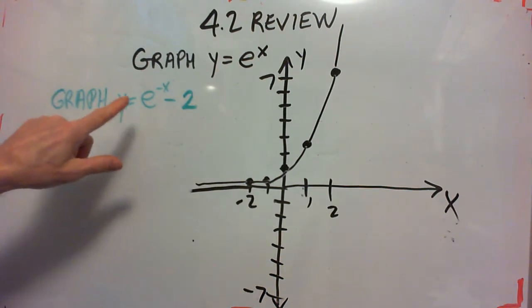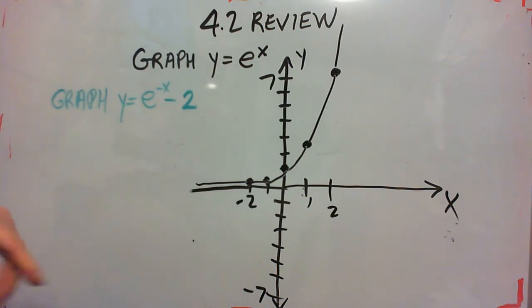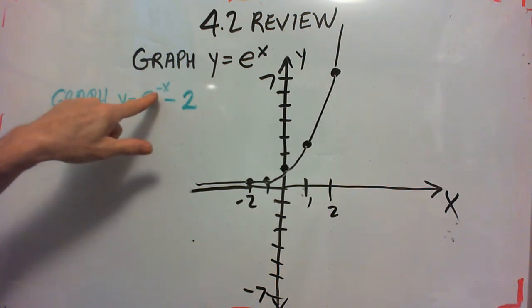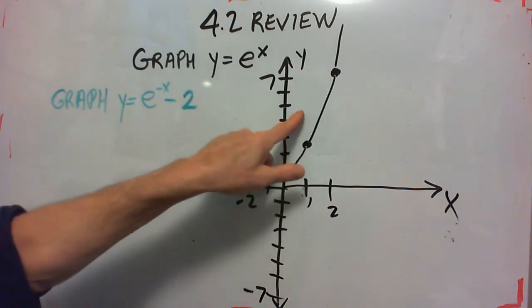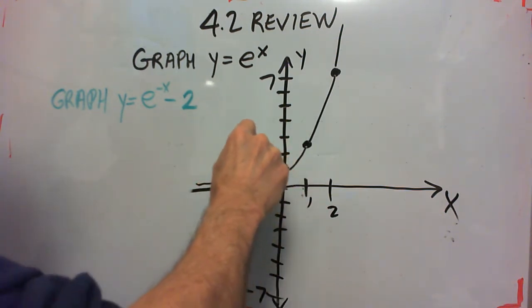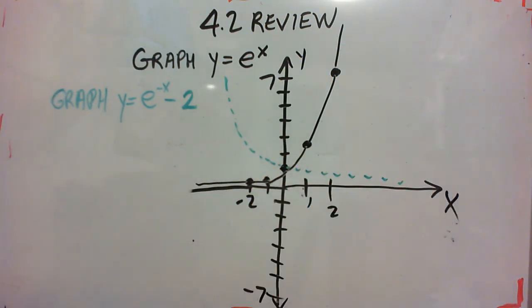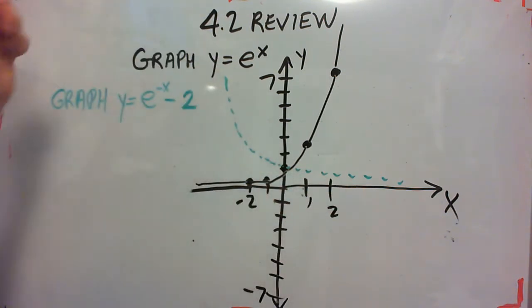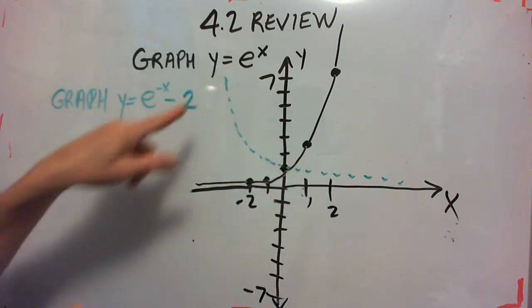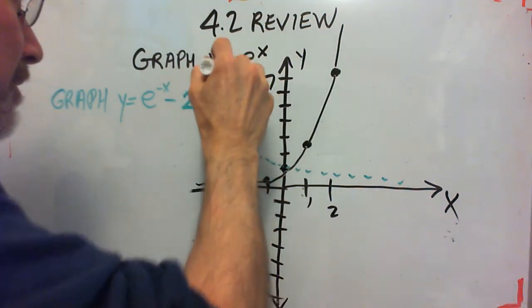Okay, now we're going to graph e to the negative x minus 2 by using shift rules. When we replace x with negative x, we reflect this graph across the y axis. That was one of the shift rules. We covered that in 2.5. It's not really used much until you get to exponential functions. So this graph here with the dotted line is e to the negative x.